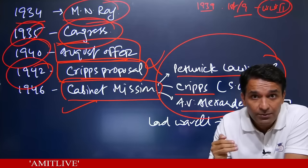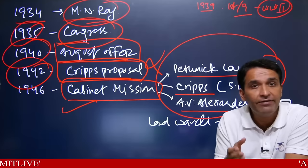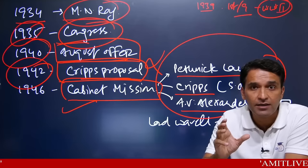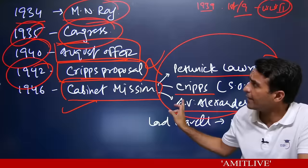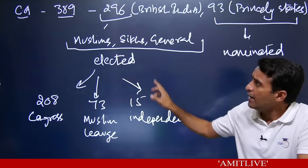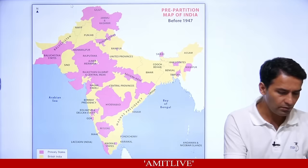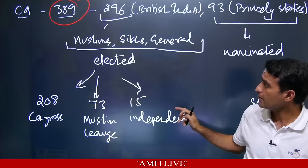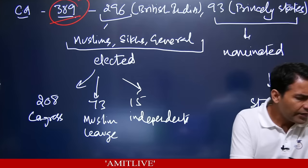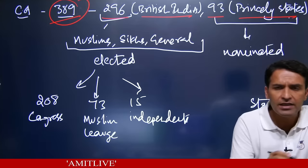These three came to India in February 1946 and proposed the way to make the Constituent Assembly. The Congress and Muslim League agreed. The Cabinet Mission plan said the Constituent Assembly would have 389 people — 296 from British India and 93 from the princely states.